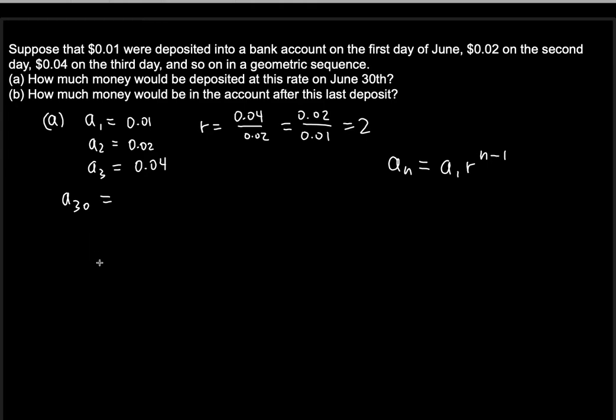So a_30 is going to be a_1, and a_1 is 0.01, that's the very first term, times the r value, which we just found, times 2, and then n is 30, so 30 minus 1. So that should essentially give you 0.01 times 2 to the 29th.